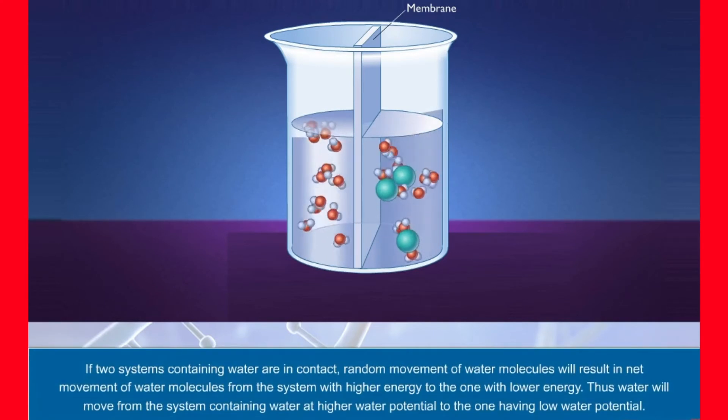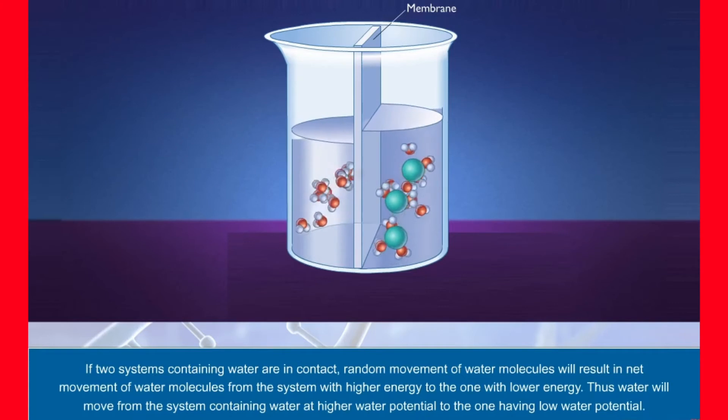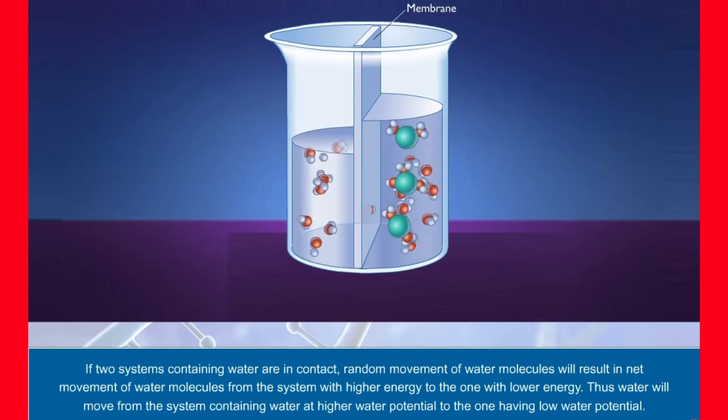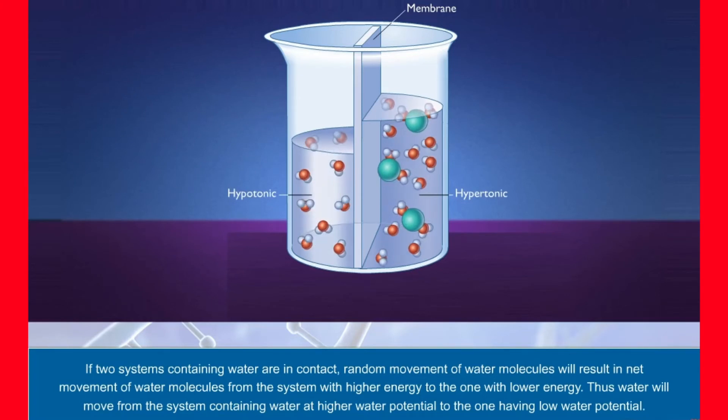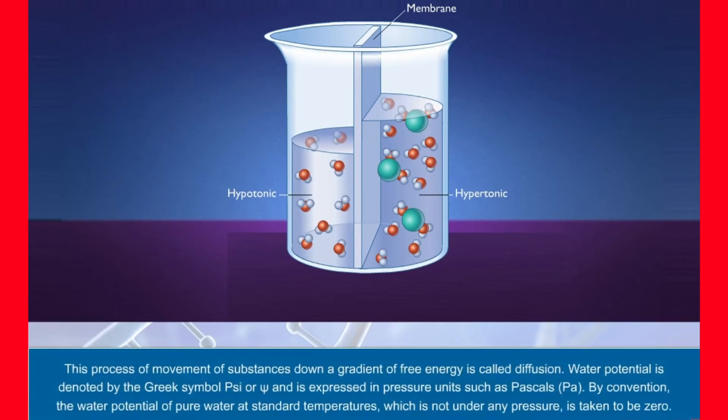If two systems containing water are in contact, random movement of water molecules will result in net movement of water molecules from the system with higher energy to the one with lower energy. Thus, water will move from the system containing water at higher water potential to the one having low water potential. This process of movement of substances down a gradient of free energy is called diffusion.